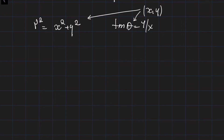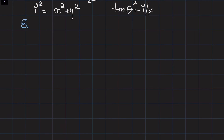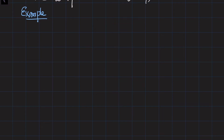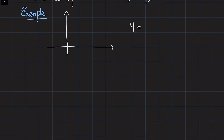Let's start from an example. If you remember, we've learned about how to sketch curves in rectangular coordinates. If you're given a curve in the form y equals some function of x, you change x to find values of y and figure out the curve. For example, if y equals x, you choose different values on the x-axis and find the corresponding y coordinates by substituting into the equation.